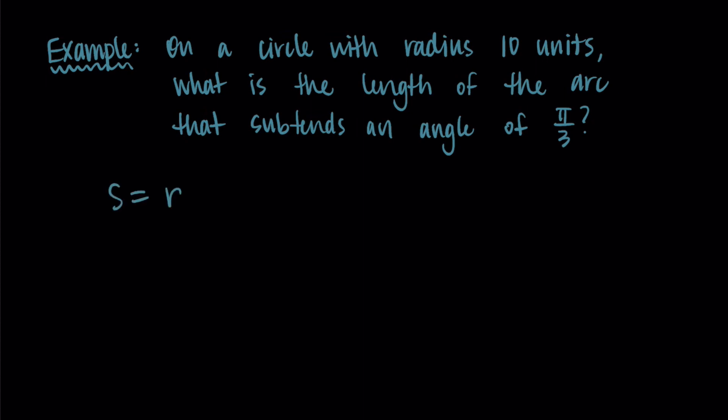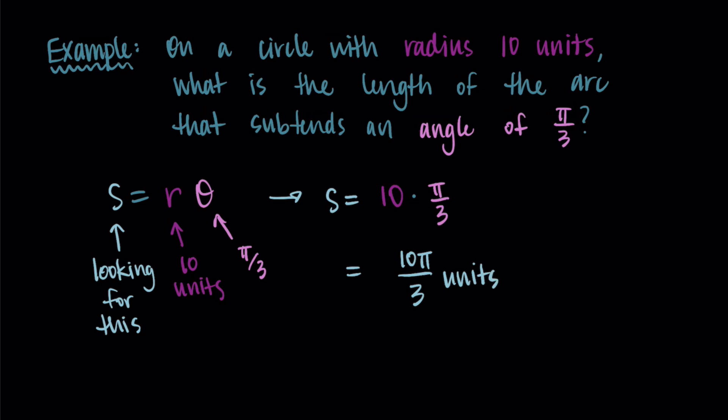So here we're looking for the arc length, we're looking for s, and we know that s is equal to r times theta. So r is our radius here, it's 10 units, and then theta is our angle, it's pi over three. So putting these into my equation, I'm doing s, the arc length is equal to 10 times pi over three. And these are like 10 units as my radius. So I'm getting 10 pi over three units as my arc length.